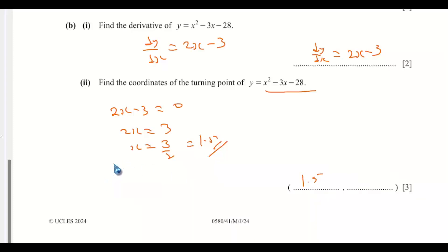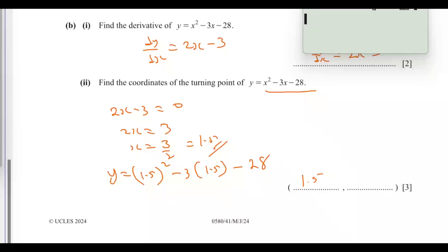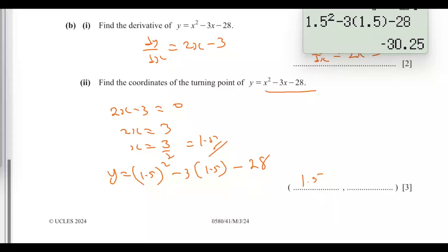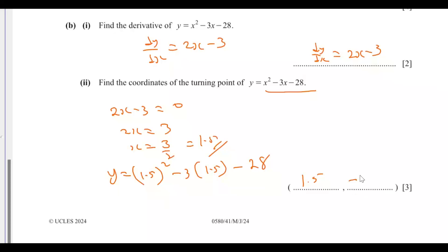To find the y-value at the turning point, substitute x equals 1.5: y equals 1.5 squared minus 3 times 1.5 minus 28. Using a calculator, this gives y equals negative 30.25. So the coordinate of the turning point is (1.5, −30.25).